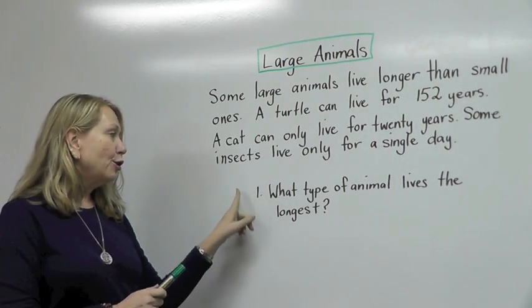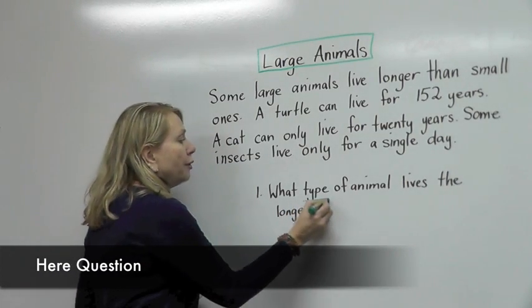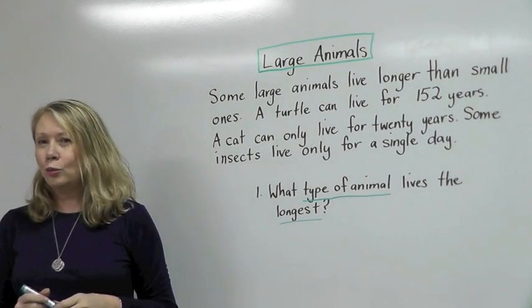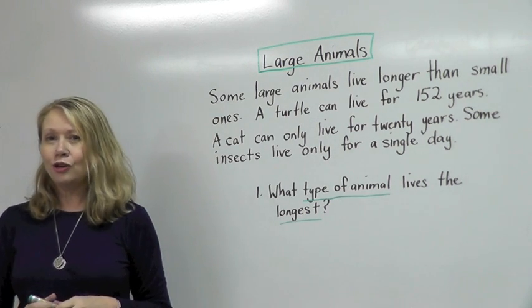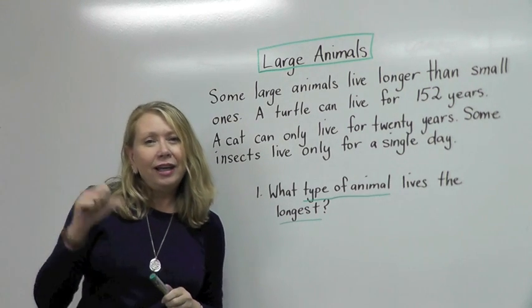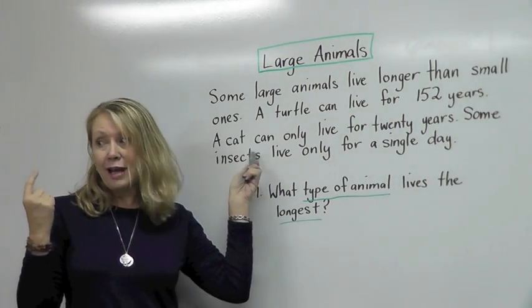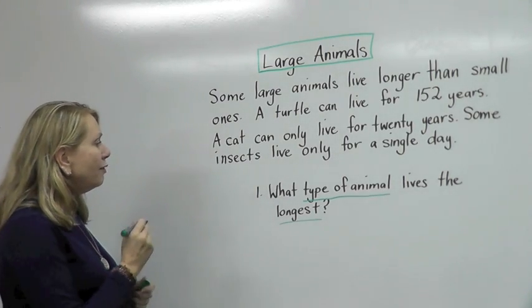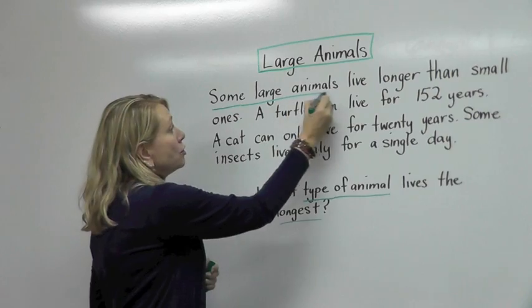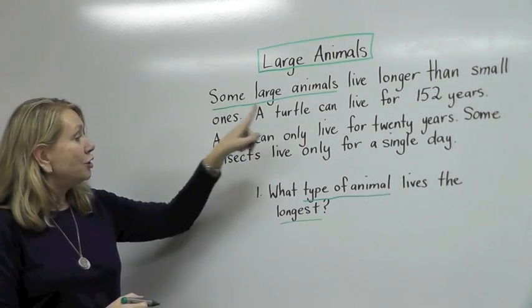Here's our first comprehension question: What type of animal lives the longest? When you look back at the passage using the 3 H's, the first thing to do is always look back at the passage, because if the answer is either a 'here' or 'hidden' question-answer relationship, there's going to be some information in the passage you can use. In the first sentence it says some large animals live longer than small ones, so the answer is large animals.